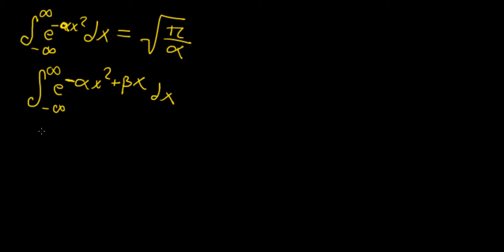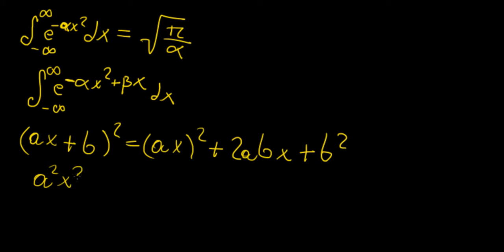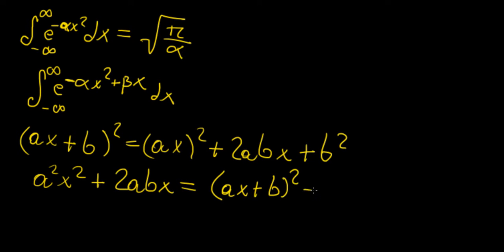To do a little recap of what completing the square is — that's the technique we're going to use. Let's say we have the following function: (ax + b)² is going to be a²x² + 2abx + b². And obviously if we want to extend this, we're going to have a²x² + 2abx = (ax + b)² − b².